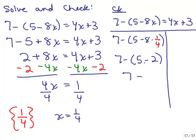Inside the parentheses: minus 8 times one-fourth — one-fourth of 8 is 2, so 5 minus 2 is 3. So that gives me 7 minus 3, which is 4. Now let's do the right-hand side: 4 times one-fourth plus 3. Four times one-fourth is 1.